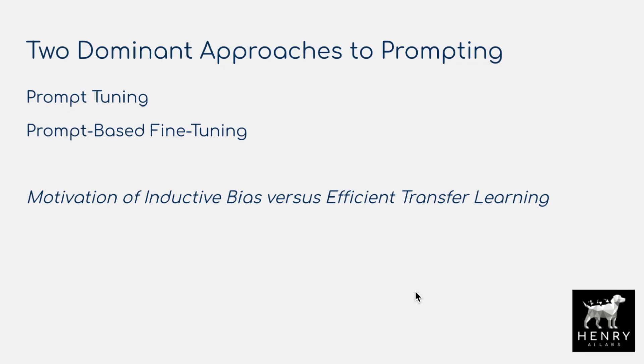There are two dominant approaches to prompting and it's important to understand the difference. Prompt tuning is where we're trying to find the best prompt to append to the inputs — either manually, via discrete search, or by embedding the prompt into a continuous space and learning it with gradient descent. Prompt-based fine-tuning is where we use the prompt to aid in the fine-tuning itself — using the prompt as inductive bias or data augmentation to guide fine-tuning.